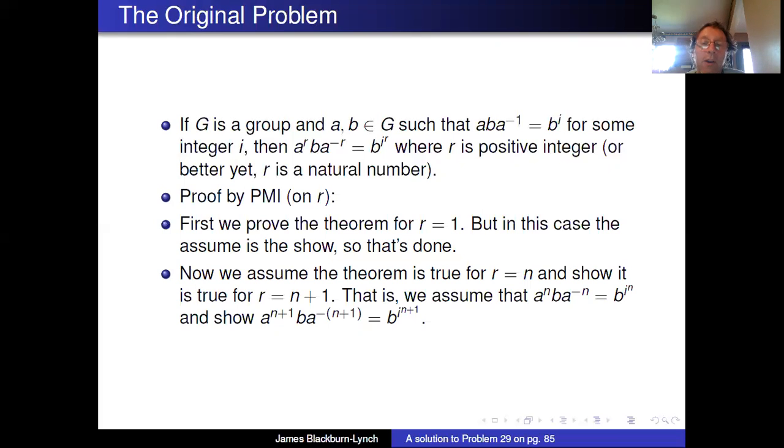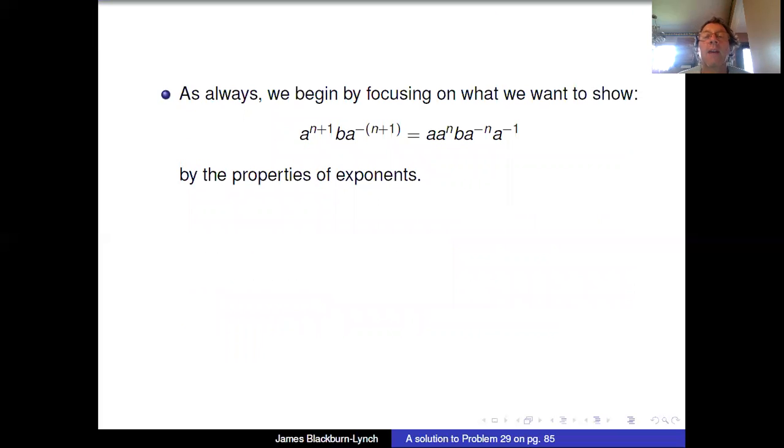Now if we move on, we're going to assume it's true for r = n, and we're going to show for r = n+1. So again, here's our assumption, a^n ba^(-n) = b^(in), and we're going to show same thing but replace n with n+1.